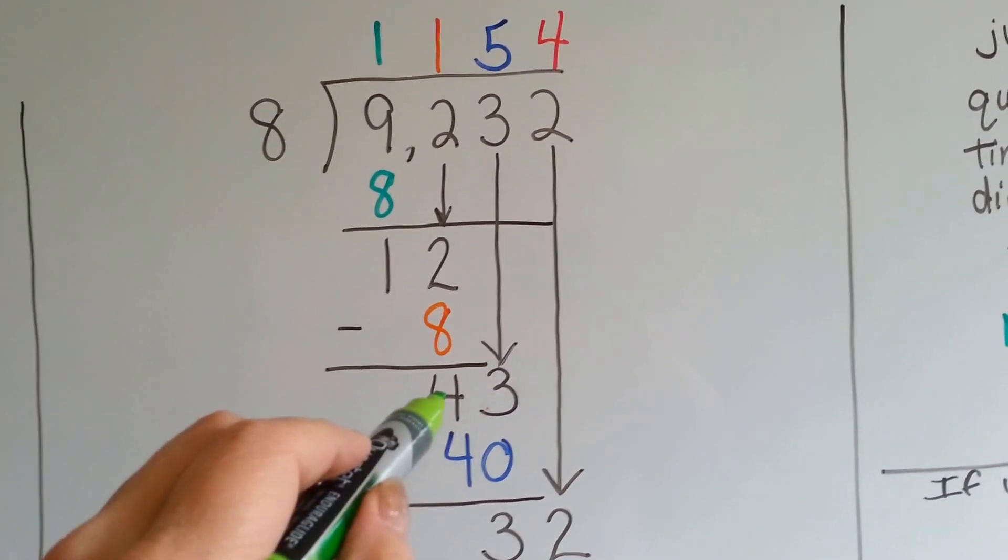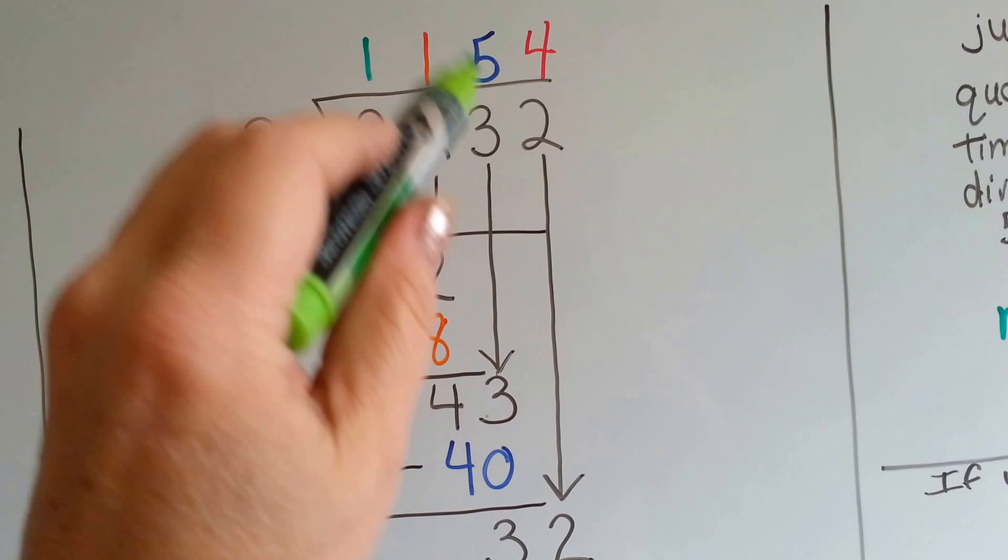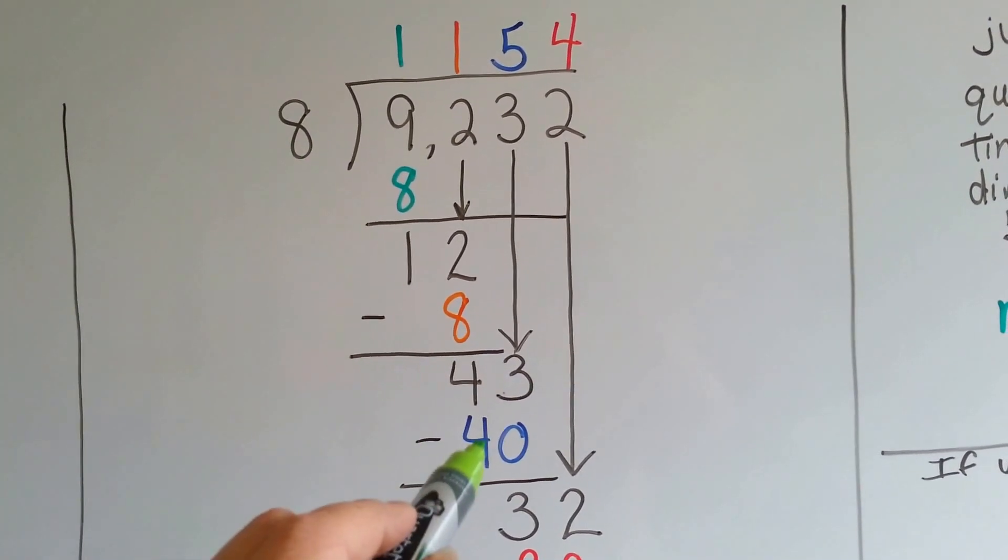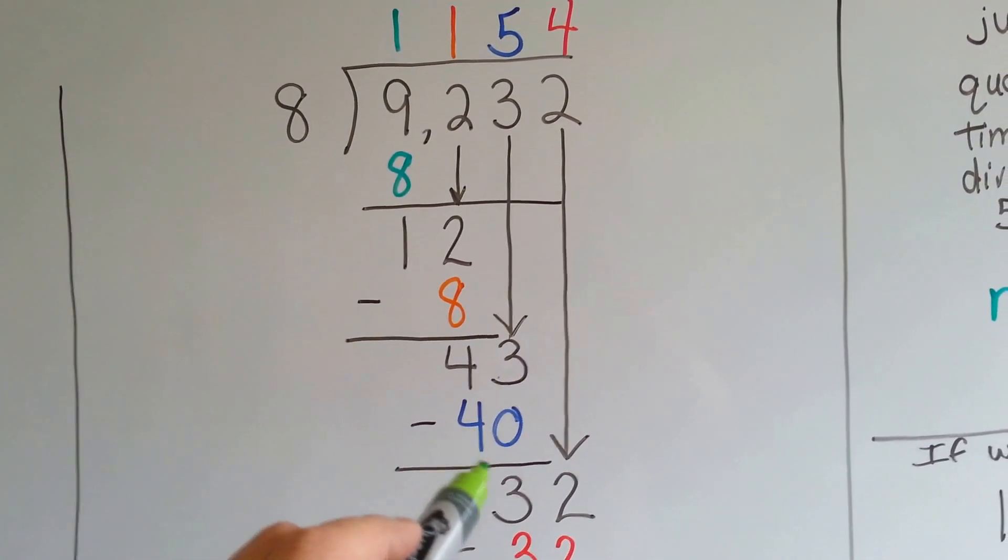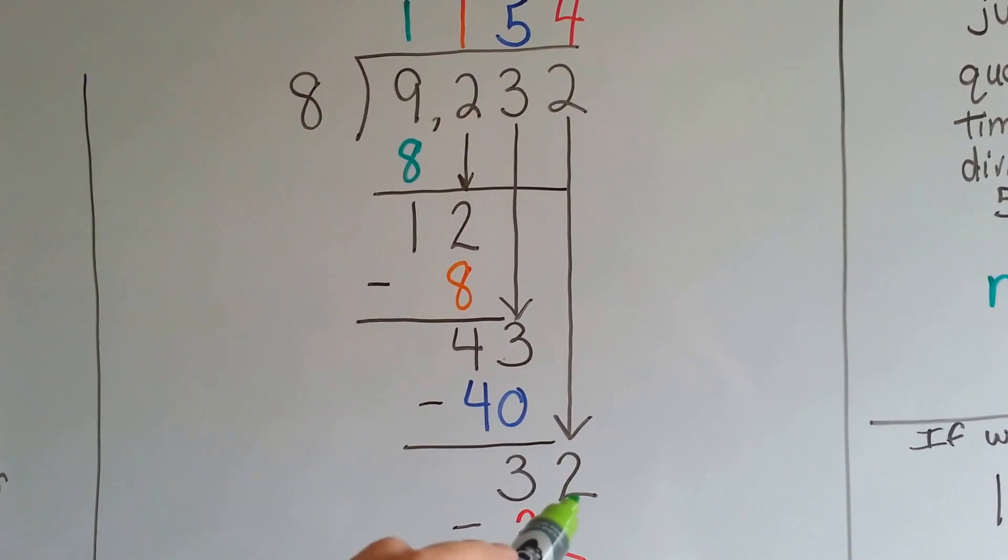How many times can 8 fit into 43? 8 times 5 is 40. We do that multiplication, 8 times 5 is 40, and put it under the 43. We do our subtraction and get 3, and now it's the 2's turn to drop down.